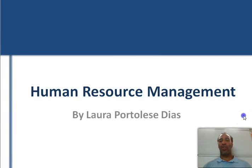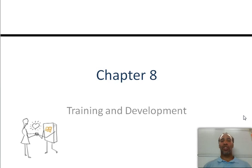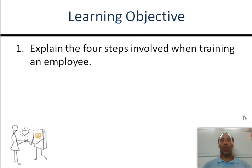Hello class, this is Demetrius Wilson with Human Resource Management. This is chapter 8 on training and development. Training and development is very important to get especially new employees and associates acclimated to your environment. It's also very important for more tenured associates because they need to enhance their skills within the work environment. Our learning objective is to explain the four steps involved when training an employee.